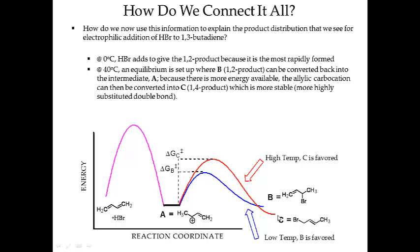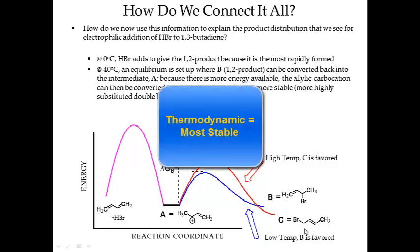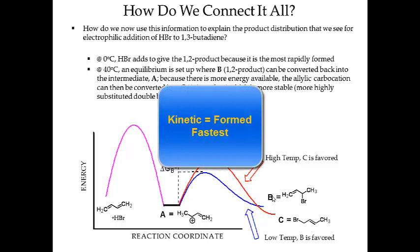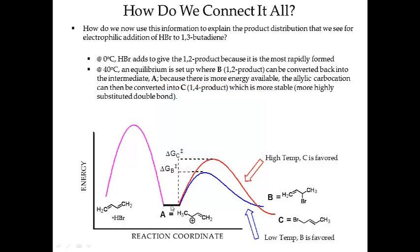At higher temperatures, I set up an equilibrium. Not only can I go from A to B, but I can go from B back to A. The major product is the more stable one, C, which I can access because I have more energy to get over the activation barrier. So the thermodynamic product is more stable; the kinetic product is formed the fastest. Depending on the amount of energy available, that determines whether I'm working under kinetic control or thermodynamic control.